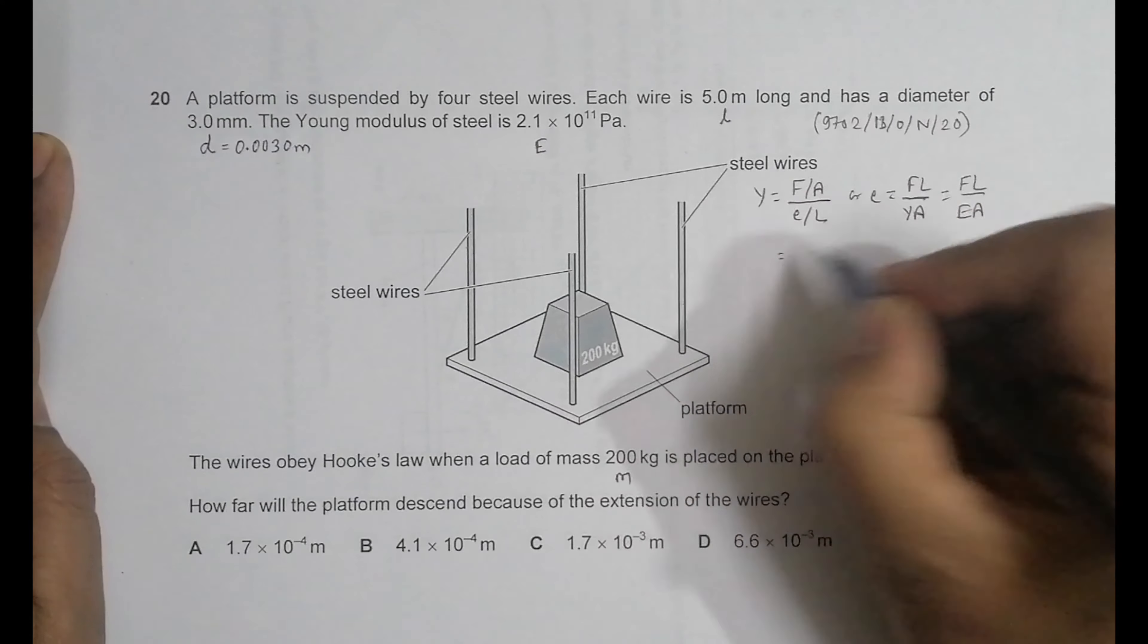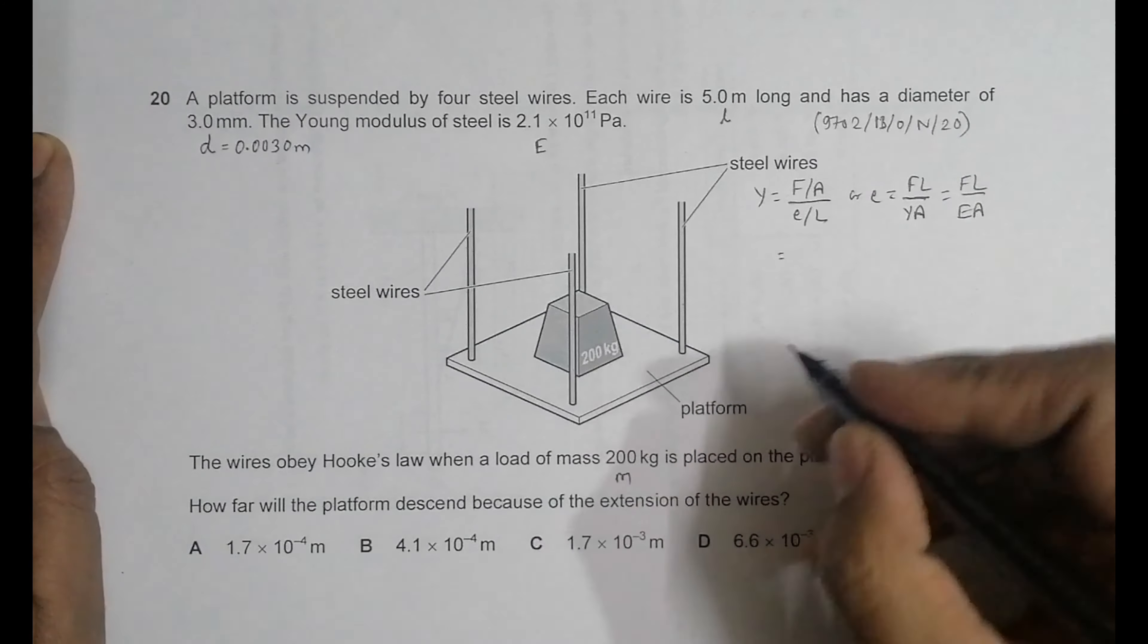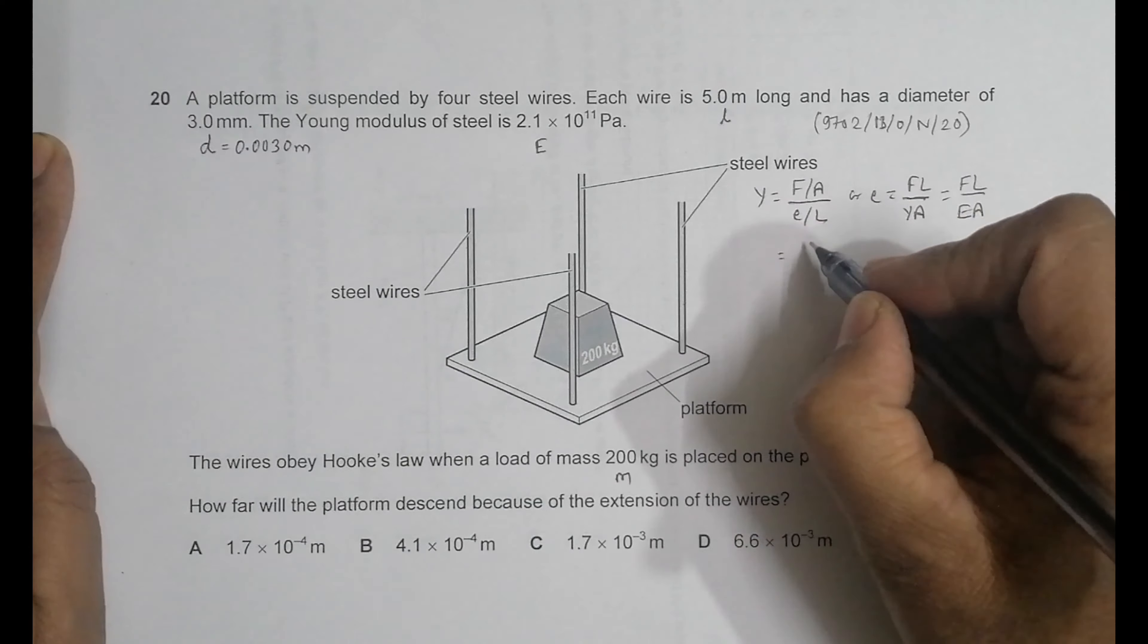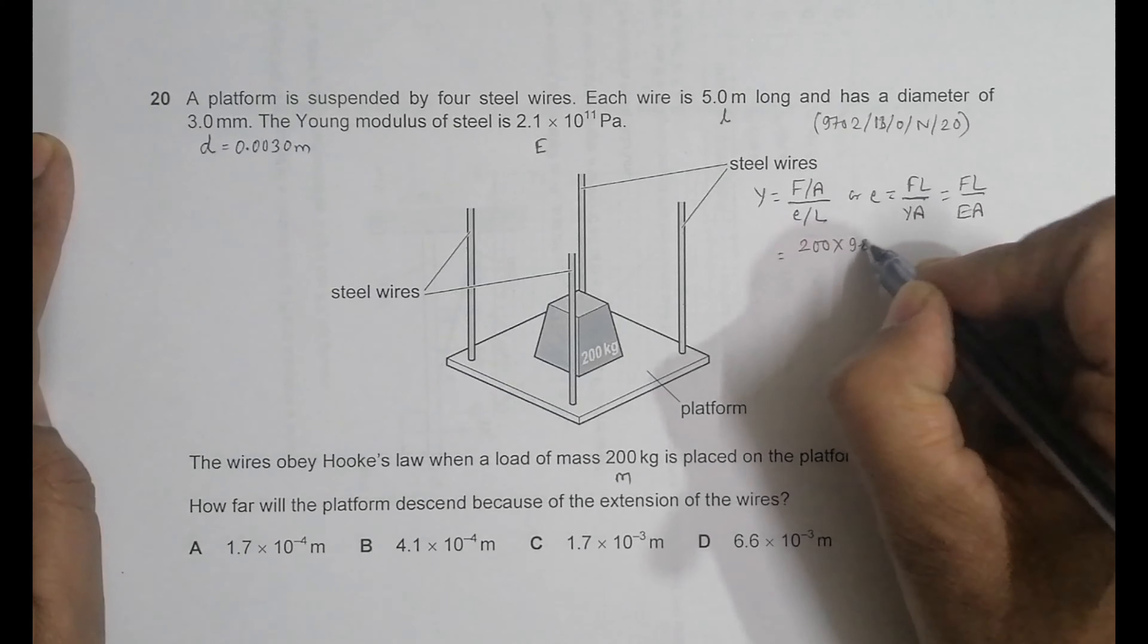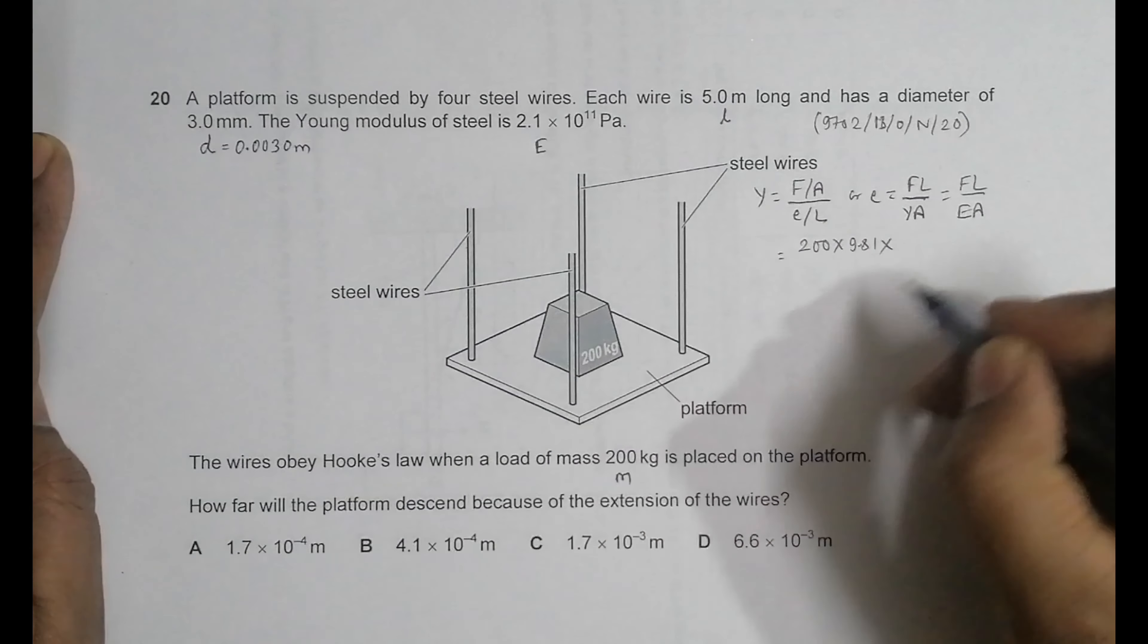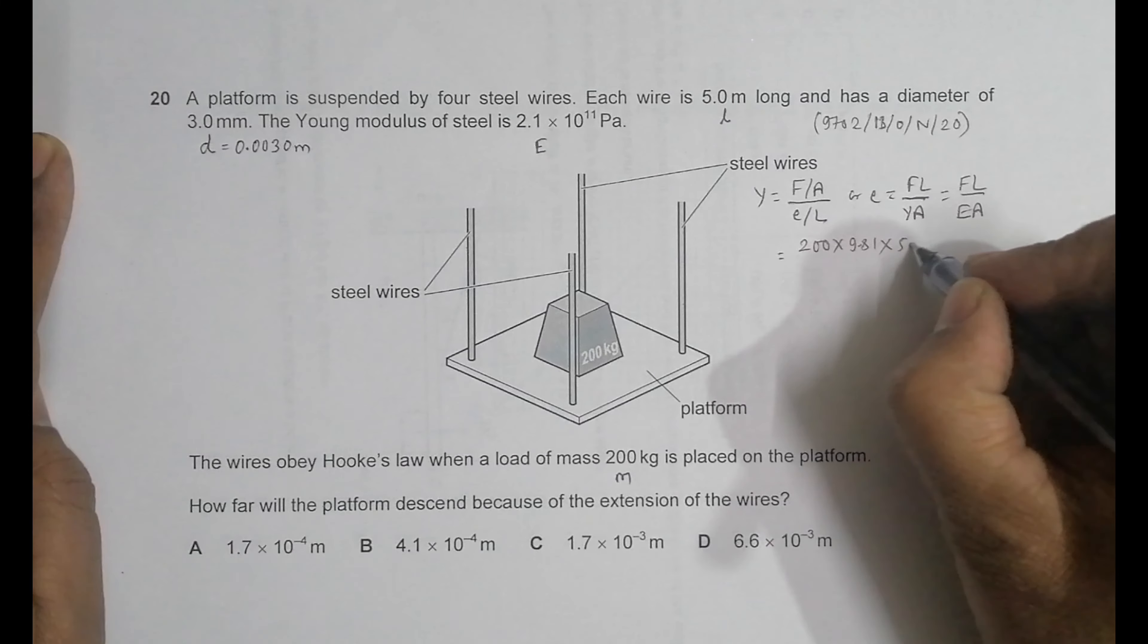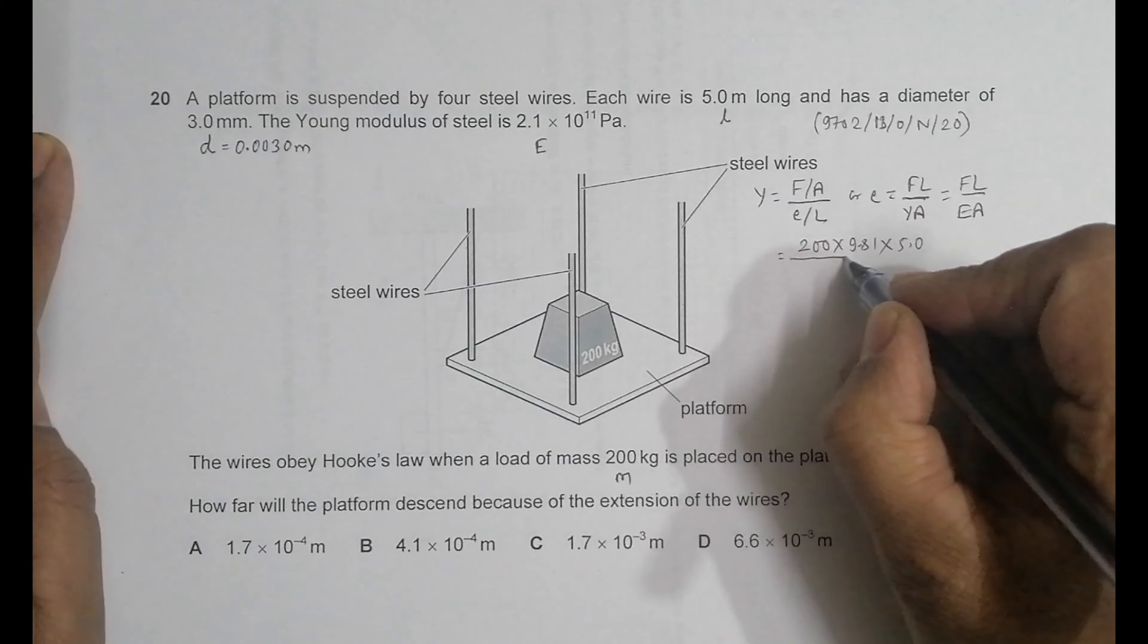The force equals the weight, so mass times g: 200 times 9.81. The length of each wire is 5.0, and the Young modulus is 2.1×10^11.